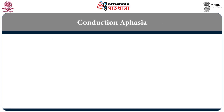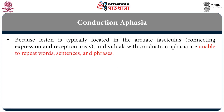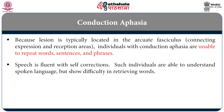In conduction aphasia, the lesion is in the arcuate fasciculus — the fibers connecting Wernicke's area to Broca's area. The main problem is that these patients cannot repeat anything: words, sentences, or phrases — whatever you ask them to repeat, they fail. But their own speech is fluent, with possibly some self-corrections. They are able to understand spoken language but may have some difficulty retrieving appropriate words in conversation. Reading and writing varies depending on the lesion.